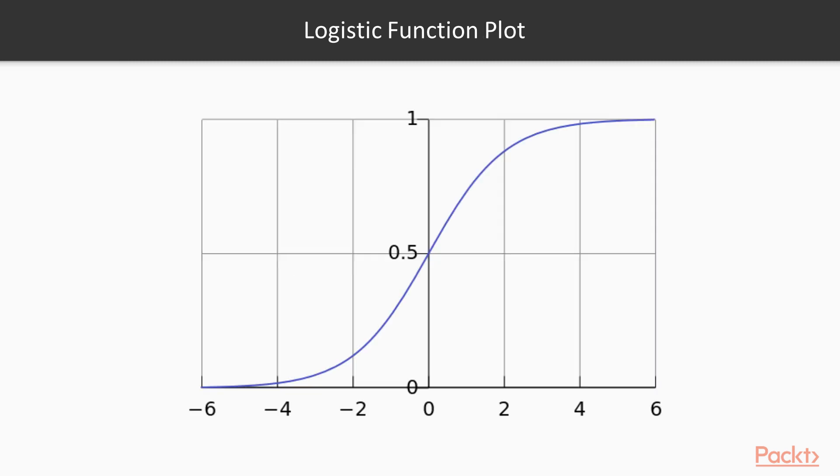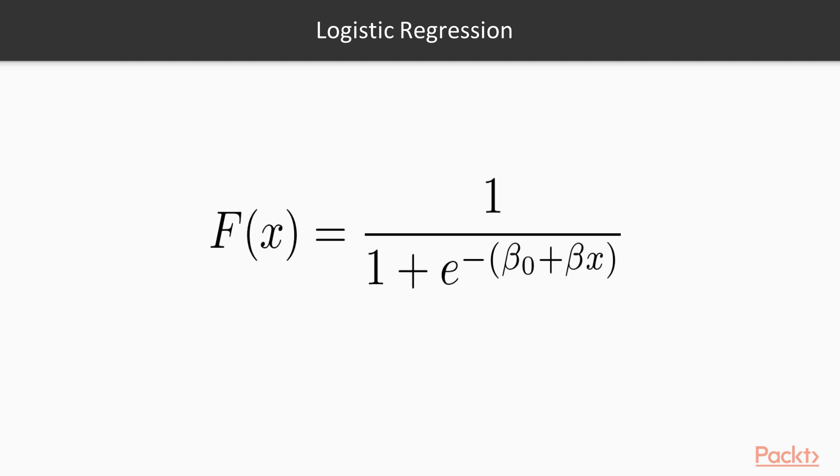Here is the plot of the value of the logistic function for the range. For logistic regression, t is equal to a linear combination of explanatory variables, as shown.